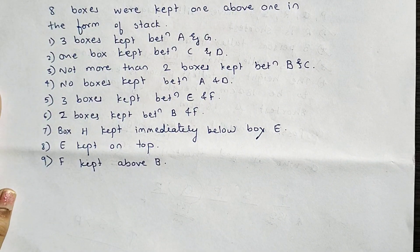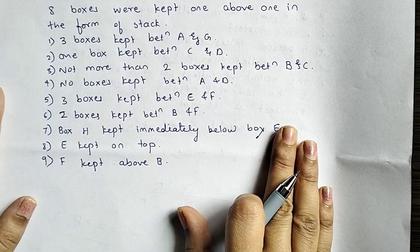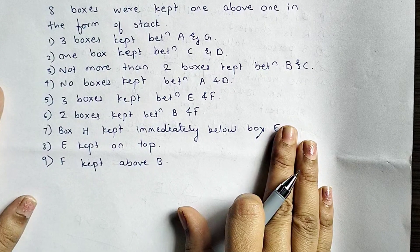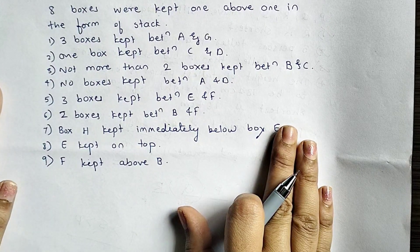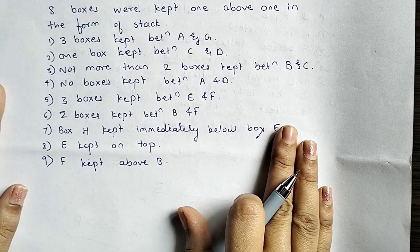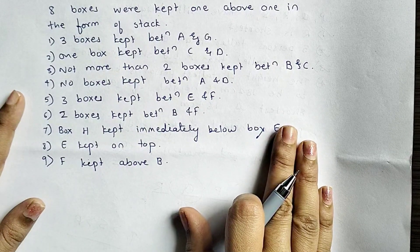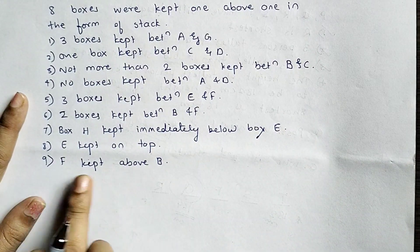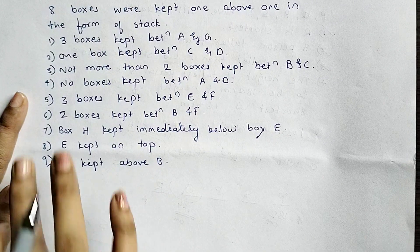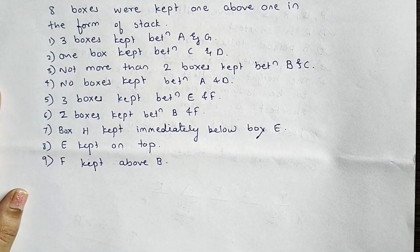Puzzle number 291. 8 boxes were kept one above another in the form of a stack. 3 boxes kept between A and G, 1 box kept between C and D, not more than 2 boxes kept between B and C, no boxes kept between A and D, 3 boxes kept between E and F, 2 boxes kept between B and F, box H kept immediately below box E, E kept on the top, and F kept above B. So total 9 statements are given — this is a very big puzzle, but we can easily solve it.